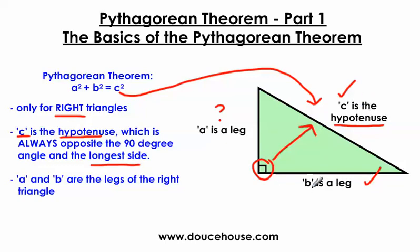But again, it doesn't really matter if you call the two shorter sides a or b. You can flip them around. It doesn't matter. It absolutely is essential that you label the longest side here c. And so we've got this side here. It's called the hypotenuse.